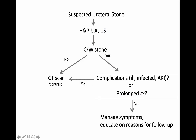Here's the algorithm: if you think maybe there's a kidney stone, and history, physical, urine, and ultrasound all add up, and there are no complications and symptoms haven't gone on for a long time, then just manage their symptoms, tell them what to come back for, and get them follow-up. If it doesn't add up, doesn't seem consistent with stone, or there are signs of complications, then we probably need a CT scan. I'd even argue if that's the case, maybe do it with contrast — current generation CT timing doesn't really interfere with diagnosing the stone, and contrast may help better define the complication or alternate diagnosis.